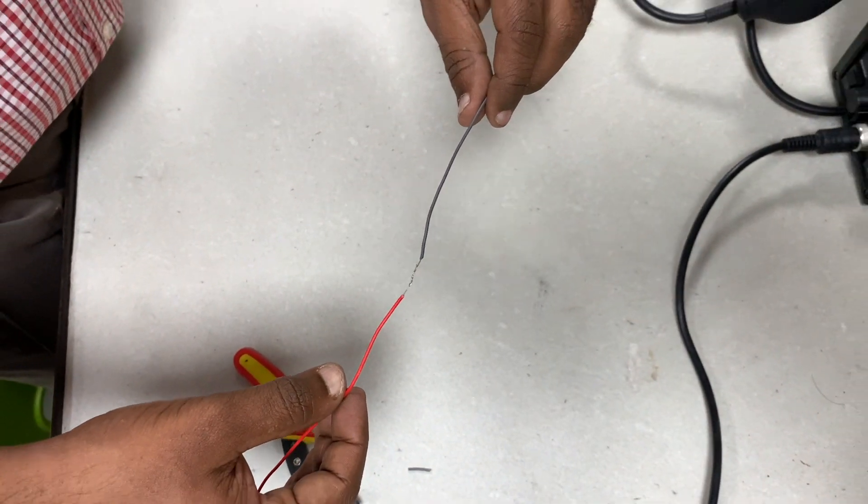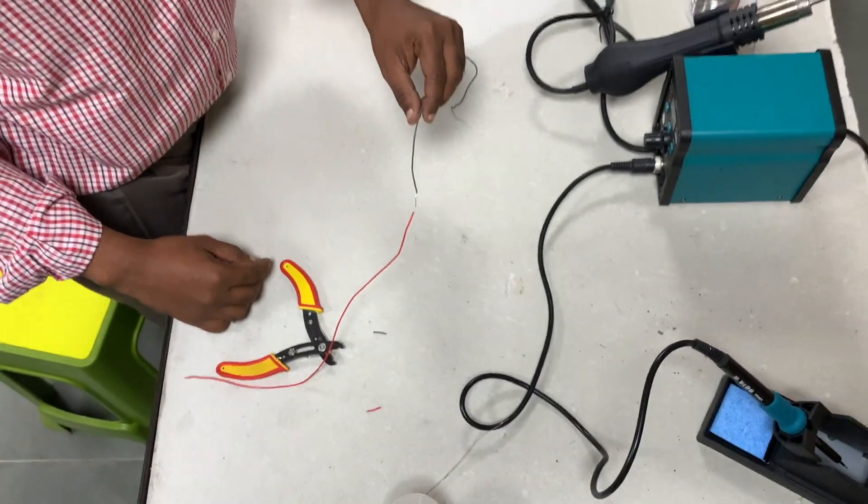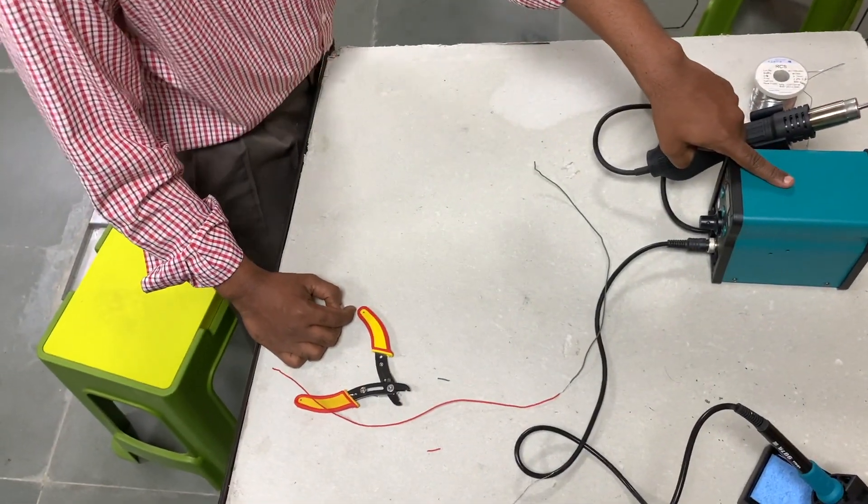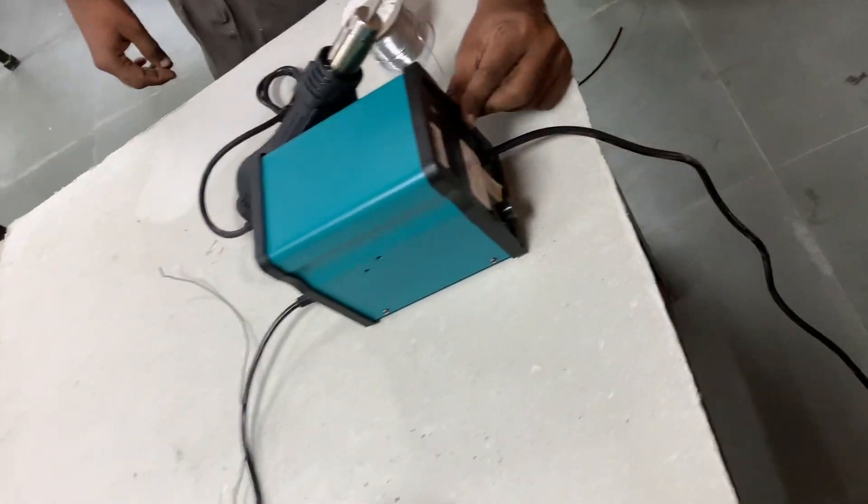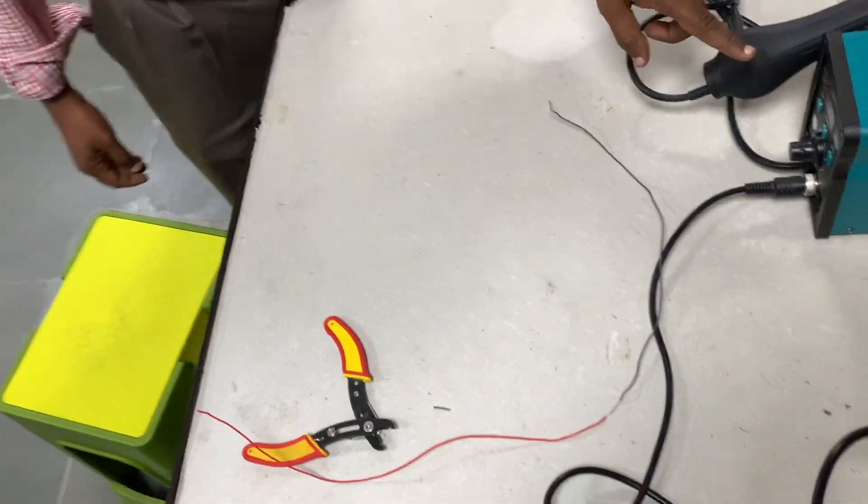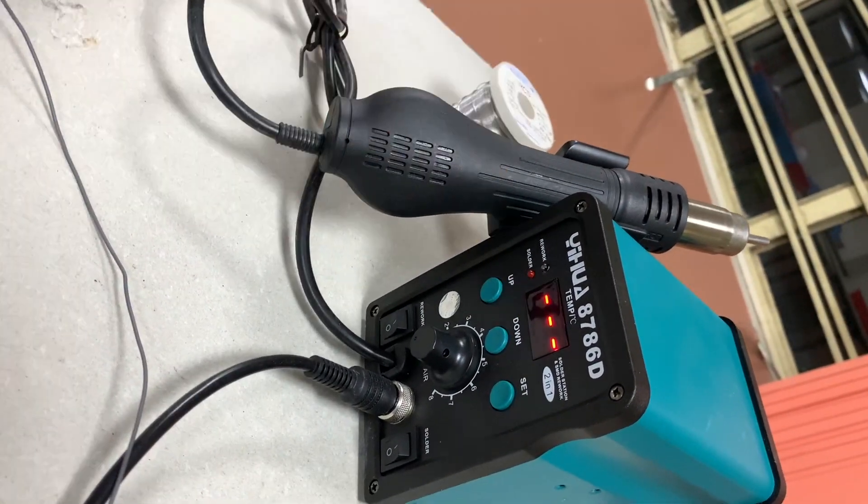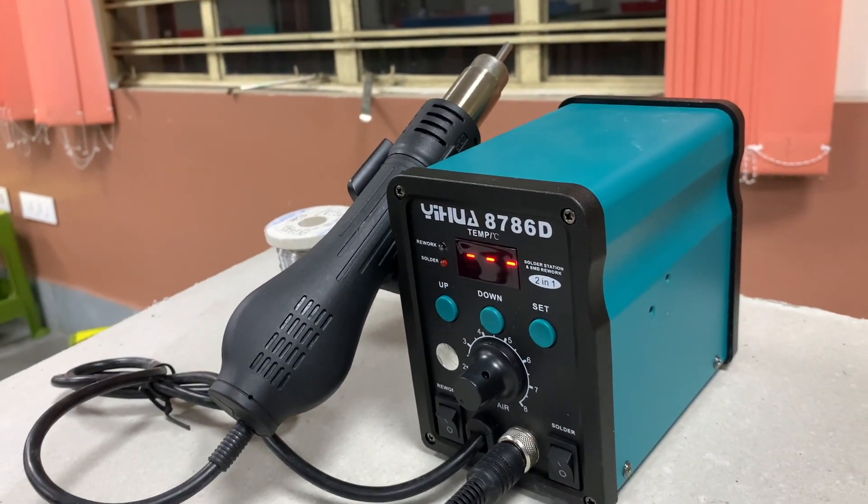Now what I'm going to do is apply the solder at the joint. For that, I'm going to use this soldering iron. So first there is a power button at the back. I turn this on. Once I turn on the power button, you can see the machine getting turned on.